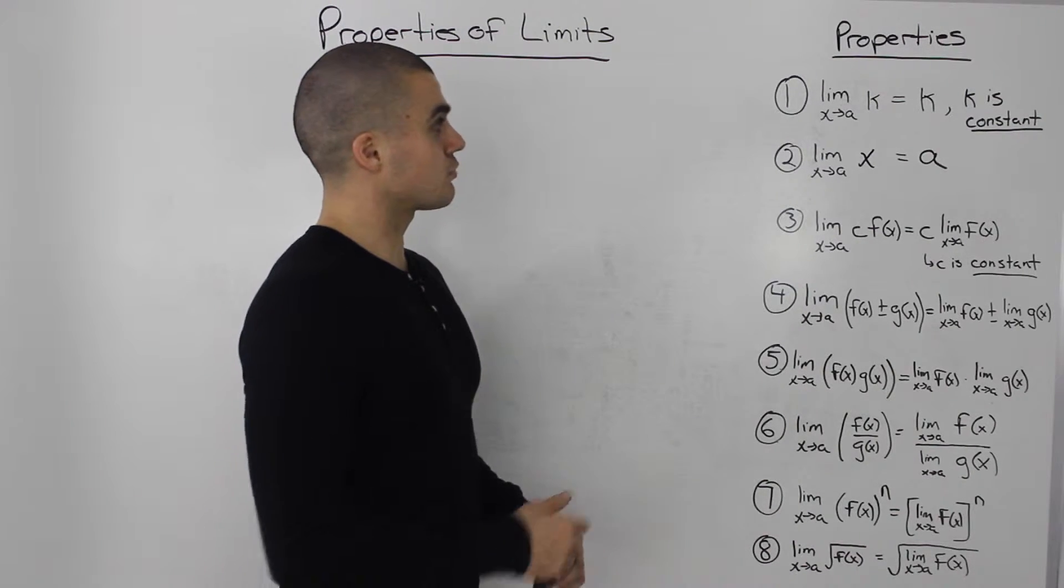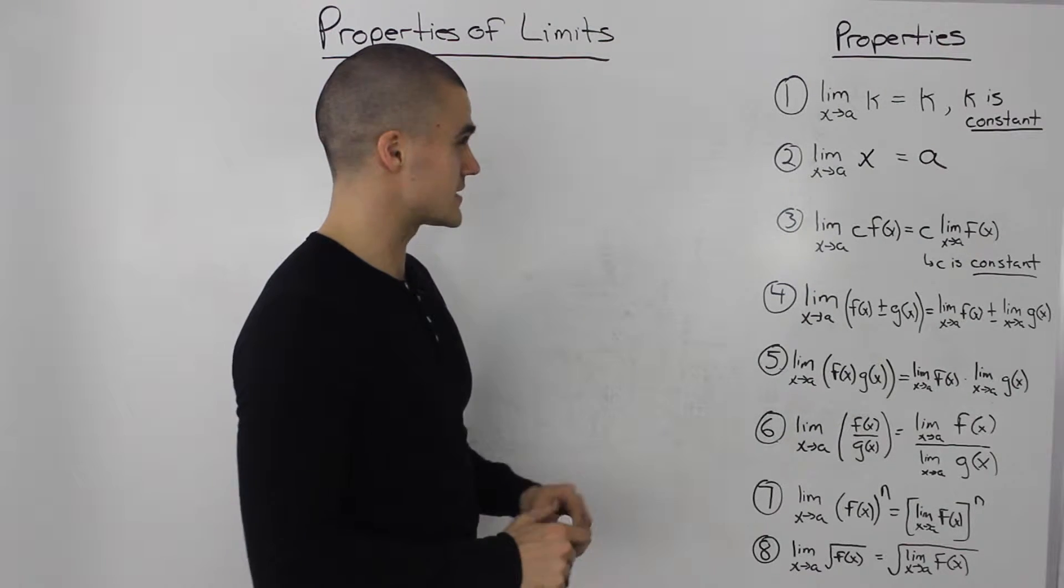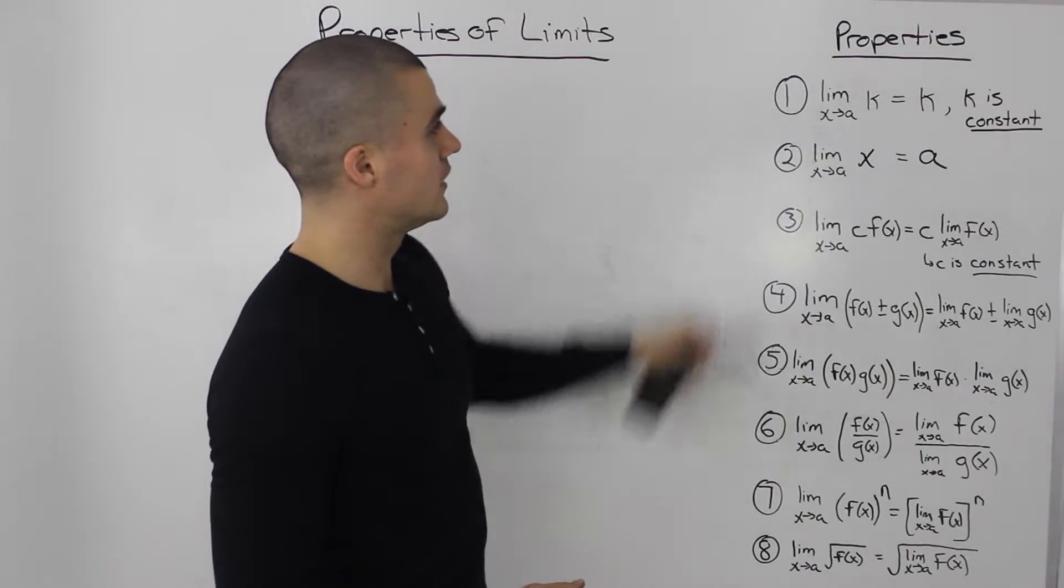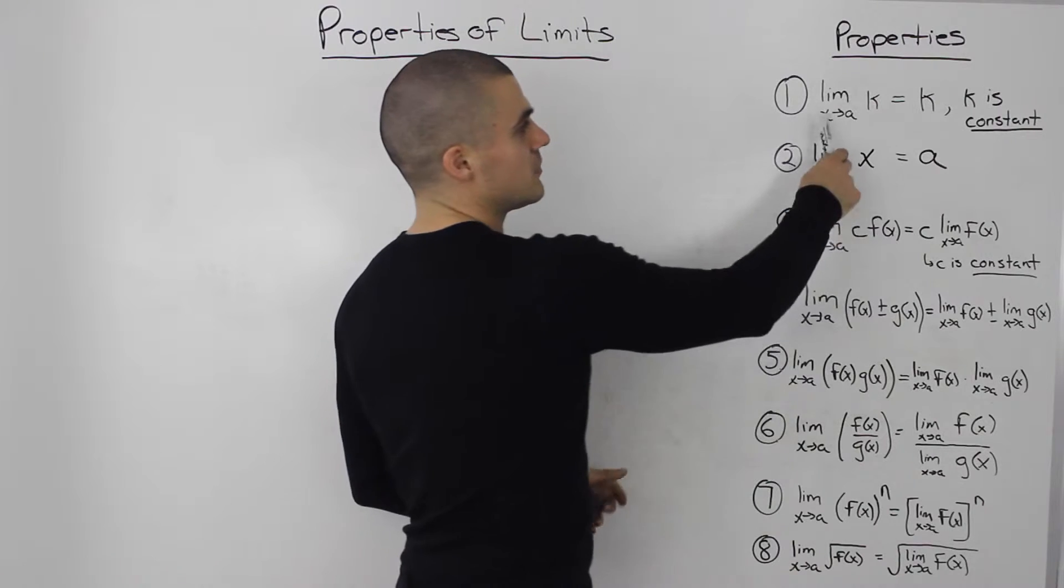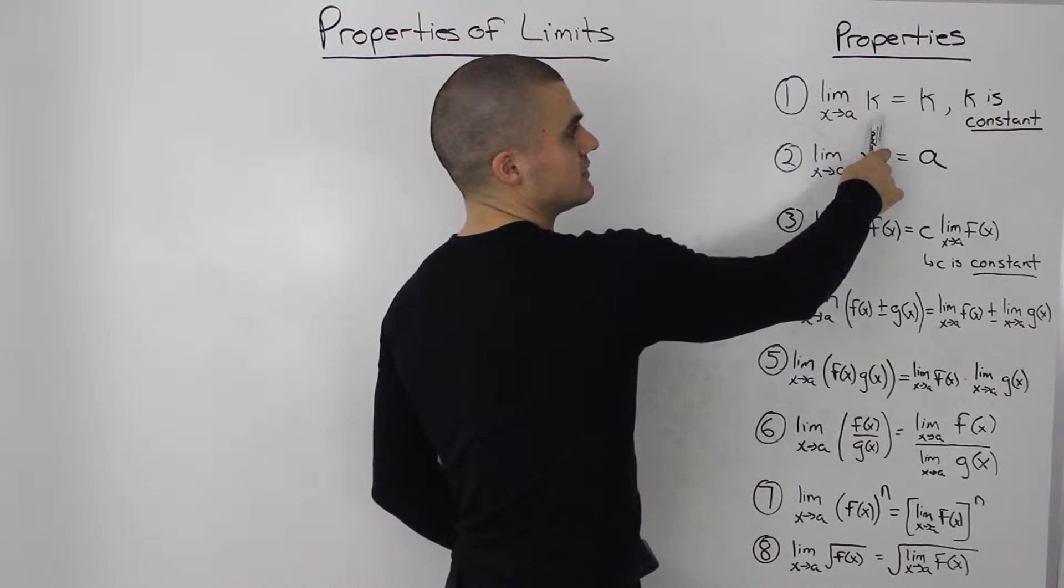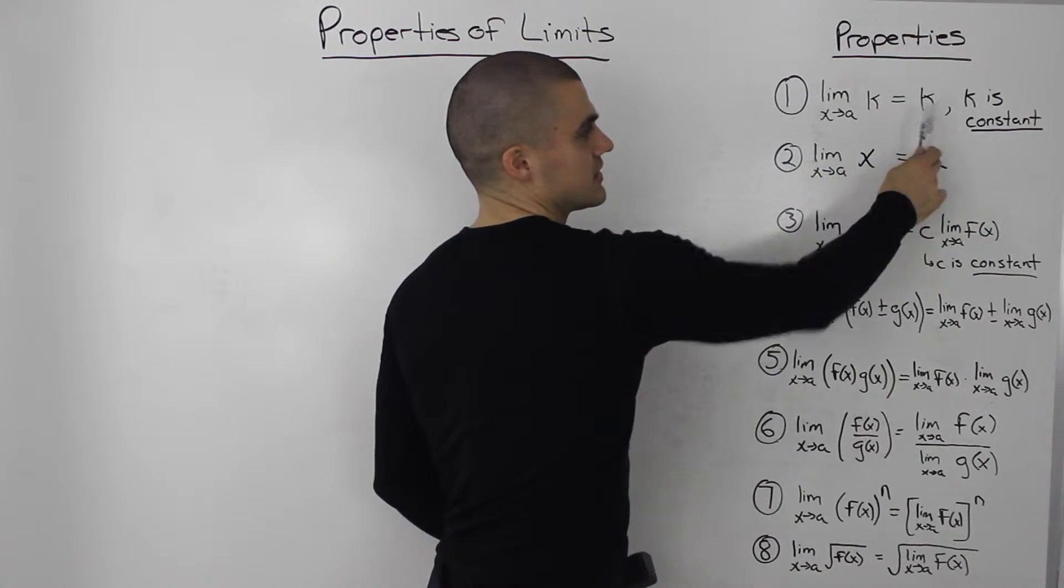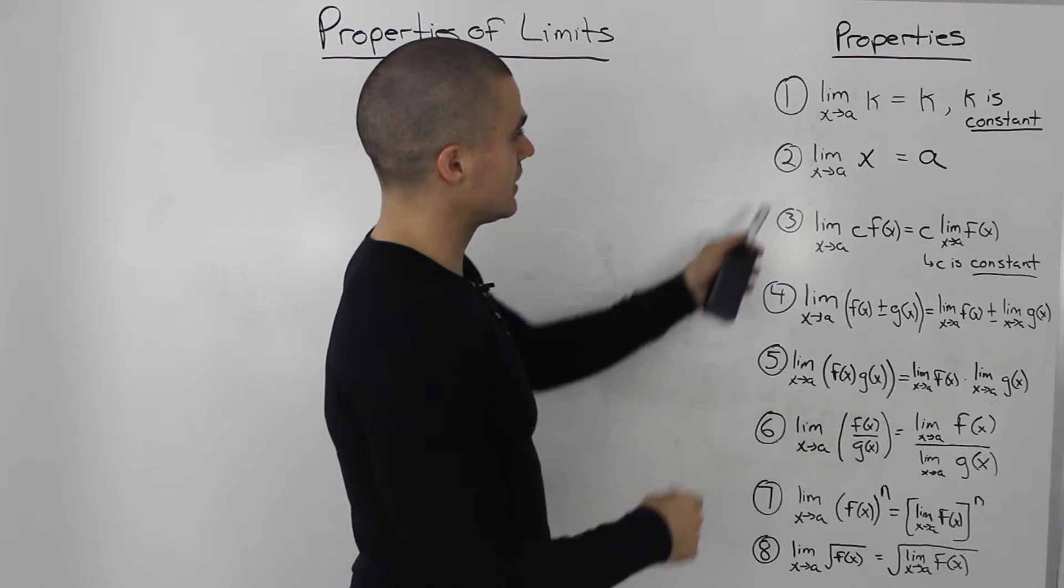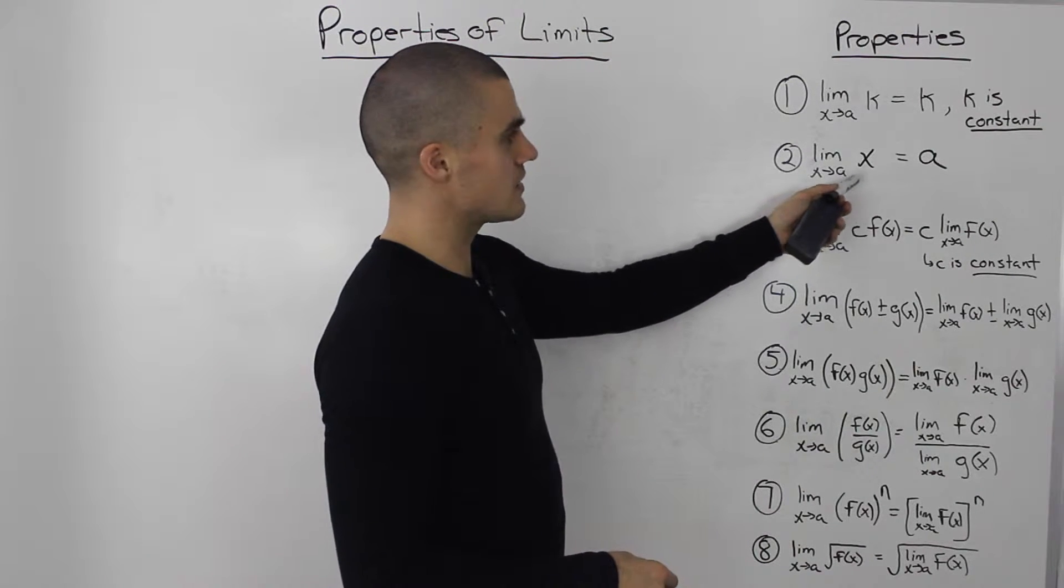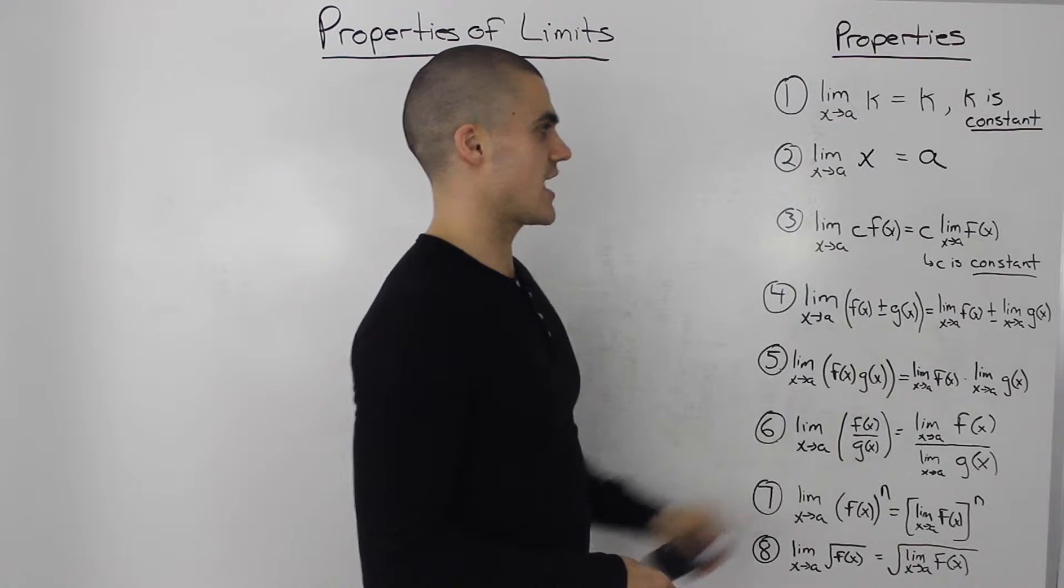Let's go through them separately. The first property, the limit as x approaches k, where k is a constant, it's just equal to k. The limit as x approaches a of x is just equal to a.